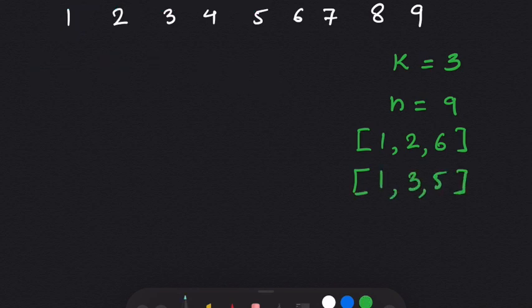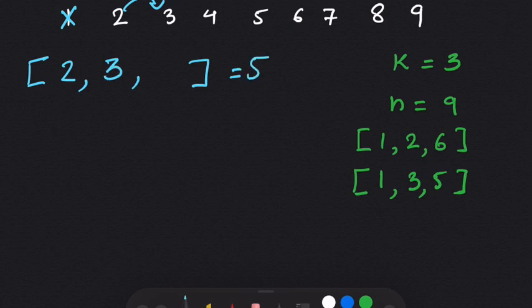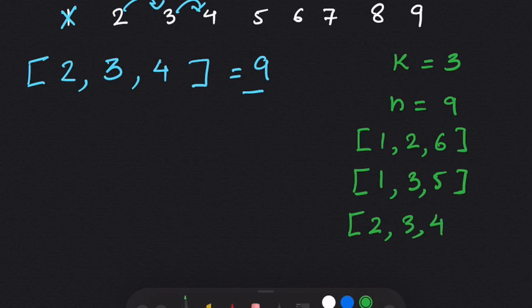Let's search for another possibility. This time we do not start with 1; we start with 2. We add 2, then 3 — the sum is currently 5. Then we add 4 — the sum equals 9. So we have found another possibility: 2, 3, 4. According to the output in example 2, these are all three possibilities.